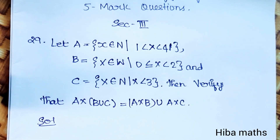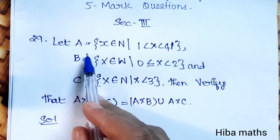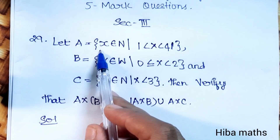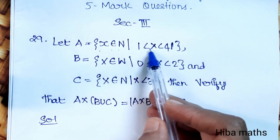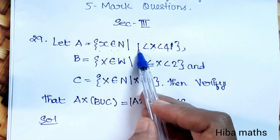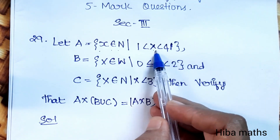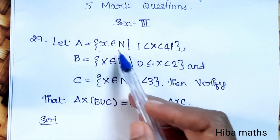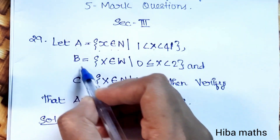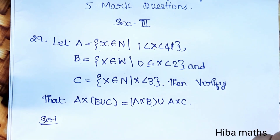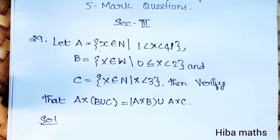First question, number 29. Let A equal to x, where x is an element of natural numbers, where x is greater than 1 and less than 4. The a and b values are very important in this type of question.